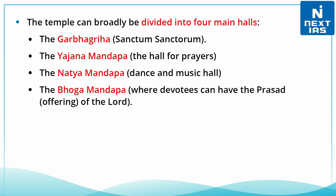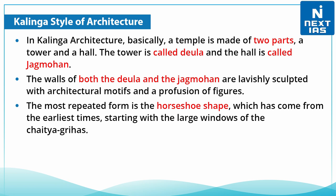In Kalinga architecture, a temple is basically made of two parts: a tower and a hall. The tower is also known as Deula and the hall is called Jagmohan. The walls of both the Deula and Jagmohan are lavishly sculpted with architectural motifs and a profusion of figures.